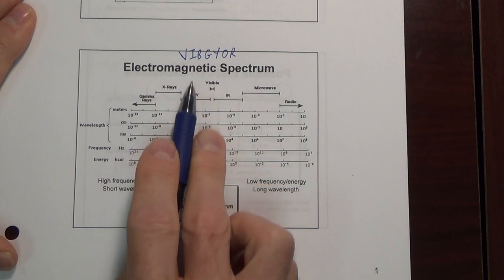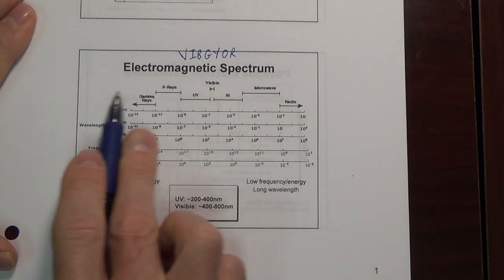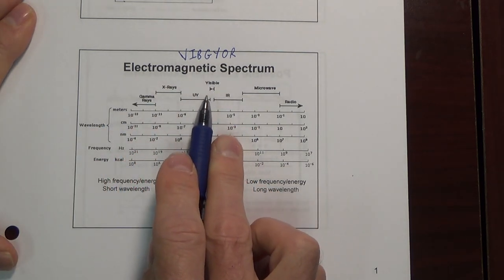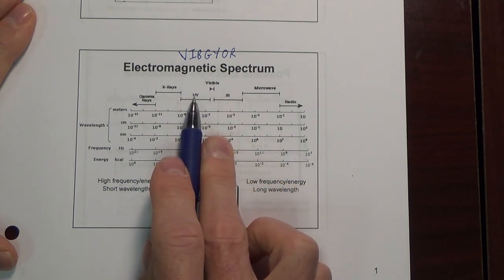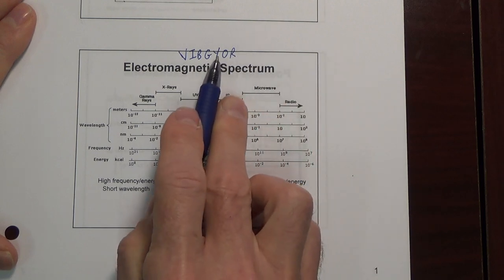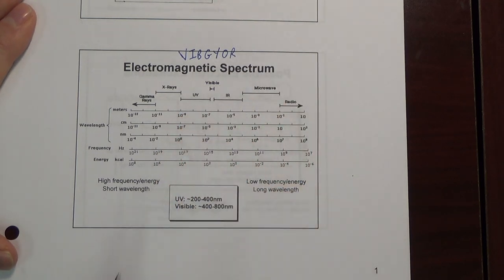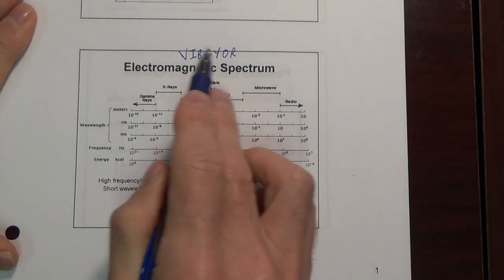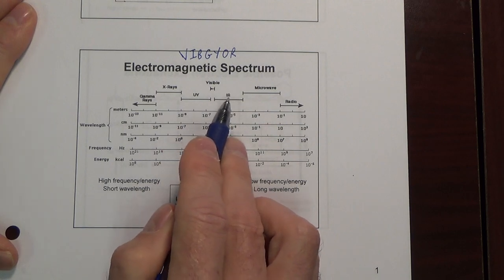Now if you move out of the visible to the left, going higher energy, you will go from violet to ultraviolet. If you go the other way, you will go from red to infrared. So hopefully you were aware of that — moving into either side of the visible takes you into UV or IR.